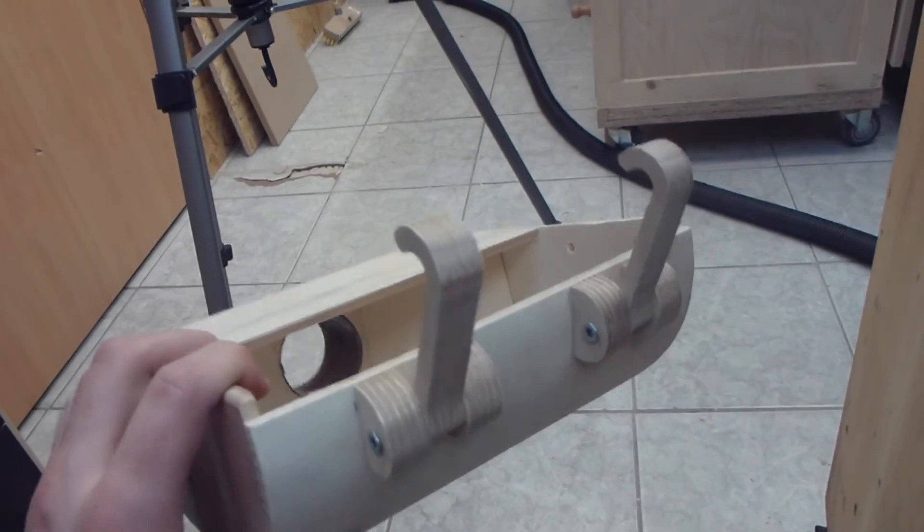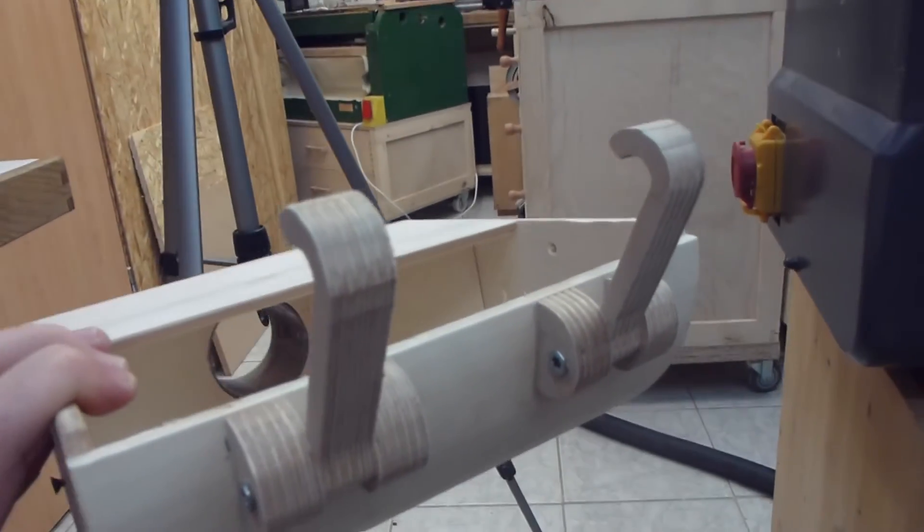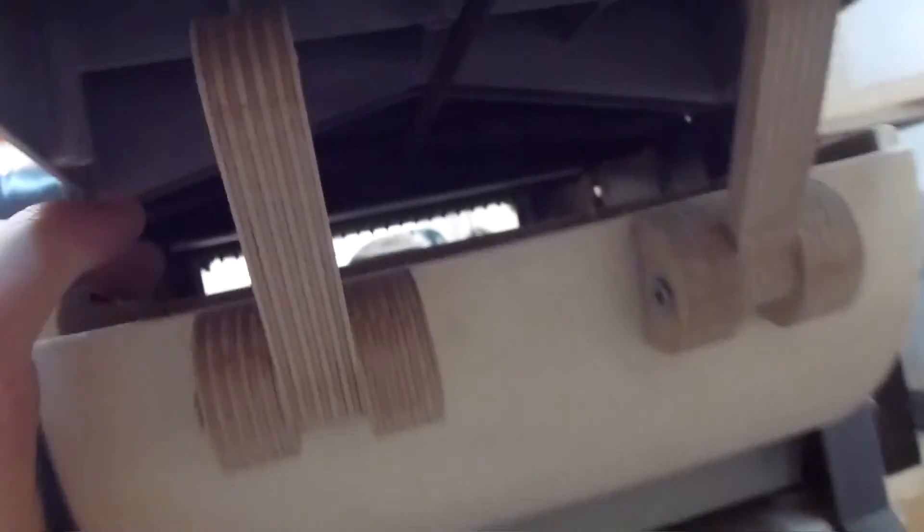Now for jointing there are those two hooks and they hook onto a rod under the table.